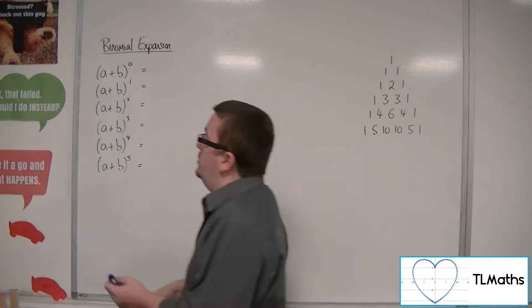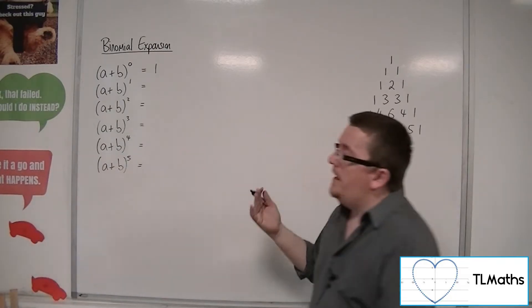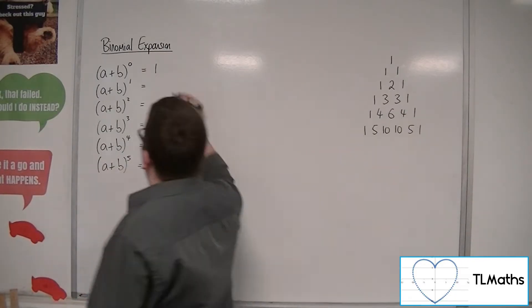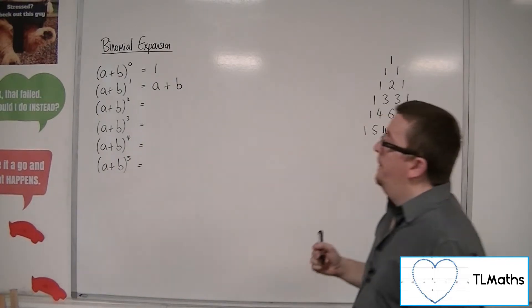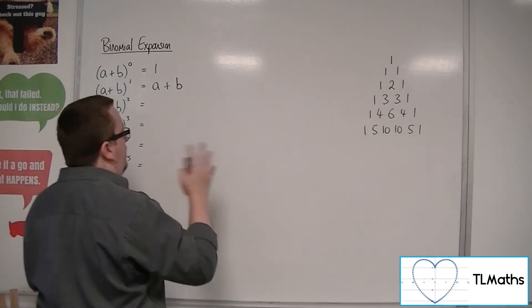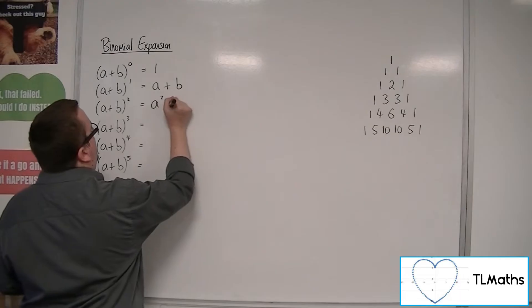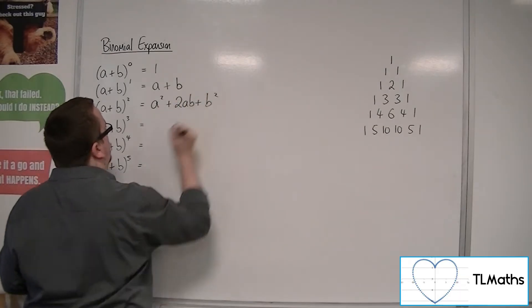So a plus b to the 0 is still just going to be 1. No change there. a plus b to the 1 is just going to be a plus b. Now a plus b squared, if you expand a plus b times a plus b, is a squared plus 2ab plus b squared.